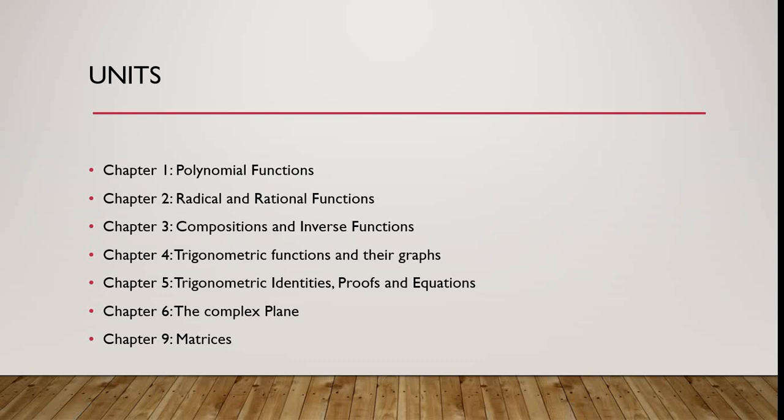After that, we will move to chapter 2, which is entitled radical and rational functions. We will start by giving the parent function and how to graph them. After that, we will talk about different types of radical functions and rational expressions, how to find the domain and the range for radical functions, how to graph them, and how to find the asymptotes for the rational and the reciprocal functions. After that, we will focus on two main functions, which are the piecewise defined function and the step functions — how to graph them, how to find the domain, and how to find the range for these two types of functions.